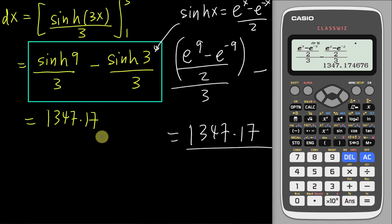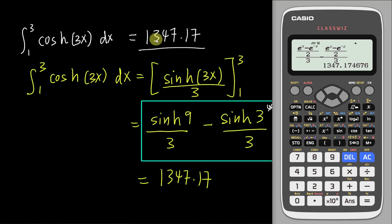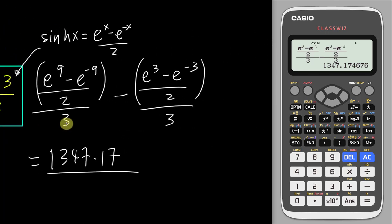All three methods give the same result: 1347.17. This calculator is very useful for hyperbolic functions. You can get the answer in about five seconds directly, but it is also good to understand how to do it manually — whether by using the antiderivative rule for hyperbolic cosine giving hyperbolic sine, or by converting to the exponential form.